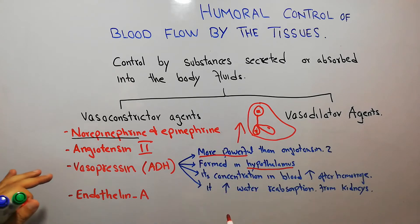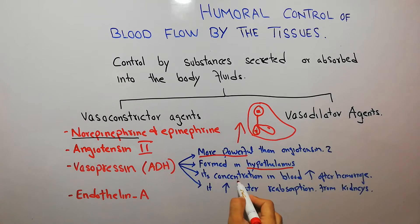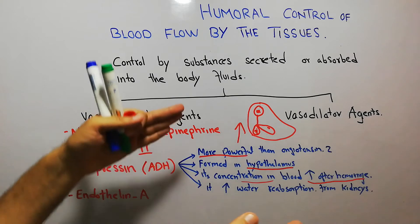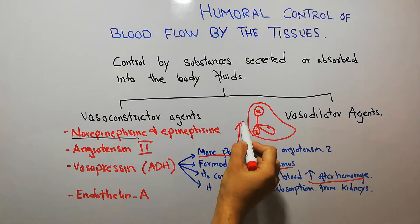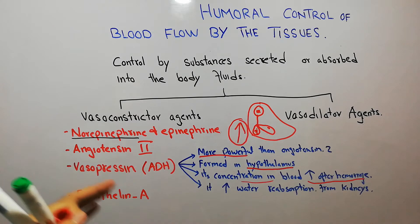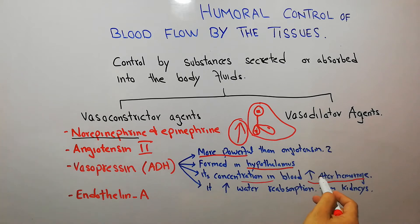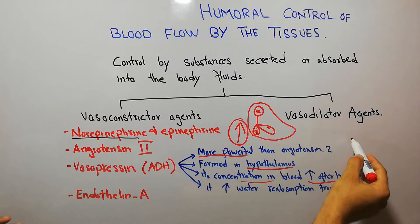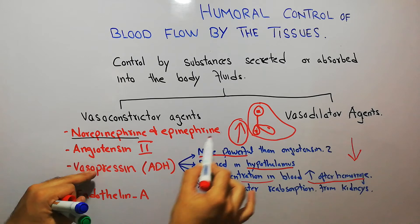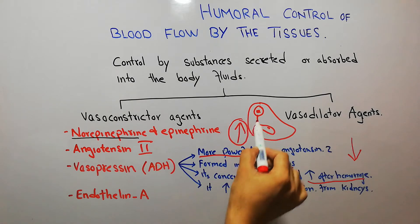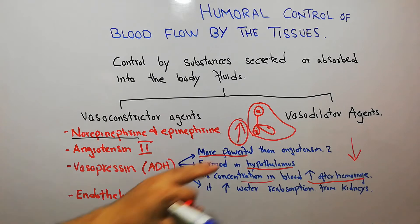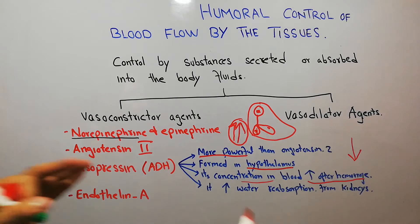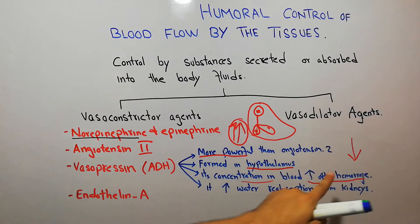Normally, its concentration in the blood is negligible, but it increases after hemorrhage. Because vasopressin is a vasoconstrictor, it constricts blood vessels and helps increase mean arterial pressure. It is secreted after hemorrhage so that it can compensate for blood loss — when blood pressure is decreasing due to blood loss, vasopressin is secreted from the posterior pituitary, goes into the blood, causes vasoconstriction, and increases mean arterial pressure.